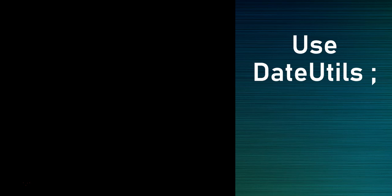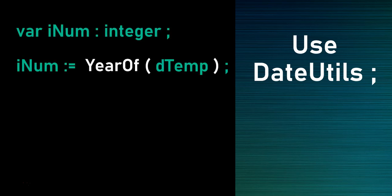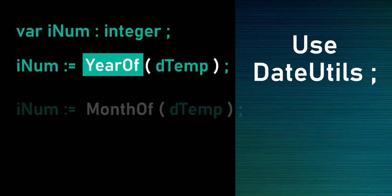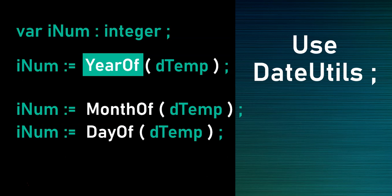The next functions I'm going to show you can't be used straight away in Delphi — you have to add the DateUtils library at the top. Once added, you get access to a whole bunch of extra functions. There's a YearOf function which takes a date and returns just the year value — so for today it would return 2021. There's also MonthOf and DayOf, which return the month or day of a particular date as integer values.